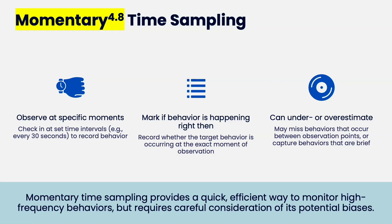You pick a certain moment within the interval and you don't change that. For example, if you're doing a 10-second interval, you might choose the last two seconds. That observation window gets bigger as the interval gets bigger — 30 seconds: look at the last three seconds; a minute: look at the last four seconds. You don't have to do anything until that set moment. You look up at the child and if they're engaged in the behavior it's a yes; if not, it's a no. You do not have to watch them for the rest of the interval.